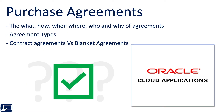Let's recap. You should now understand purchase agreements — the what, how, when, where, who, and why. You should understand the two major types: contract agreements versus blanket agreements. Still not sure? Watch it again — it's free. But if you understand the material, it's time to move on to the next lesson in this course.